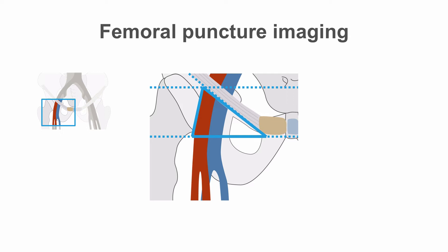Puncturing the femoral artery higher than the inguinal ligament is dangerous as it offers no structure to compress the artery against and is in direct continuity with the retroperitoneal space should bleeding from the vessel occur.